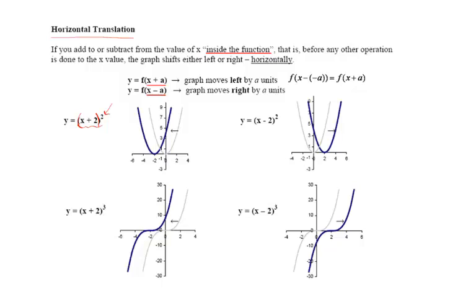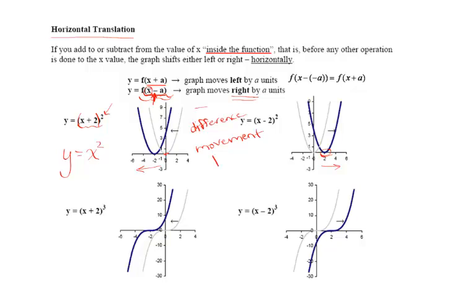If we move the graph to the right, we take the x-coordinate and move it a distance of a. The minus sign — as in f(x − a) — says we moved it in the positive direction, a distance of a. The minus represents the difference from where we started, and that difference is movement to the right.